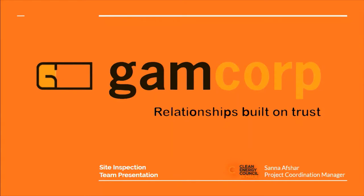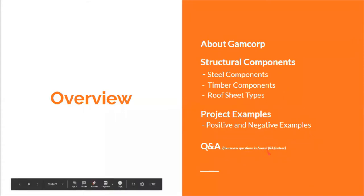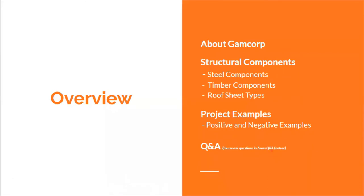Overview of today's presentation: we're going to cover what Gamcorp does, the structural components — the steel and timber components the structure is made out of — then roof sheet types in a slightly different view, and lastly a few project examples, both positive and negative. Please write your questions in the Q&A tab at the bottom. Martin, the director of Gamcorp, is here to answer questions.